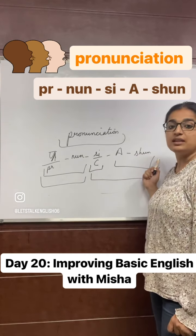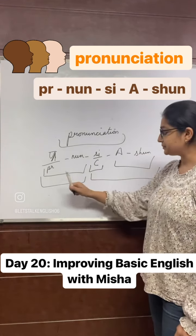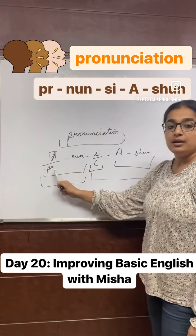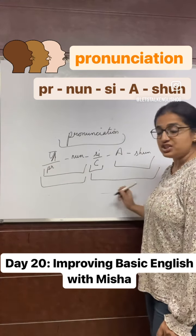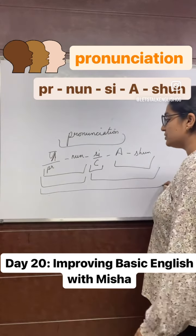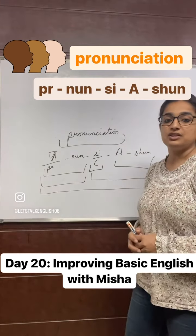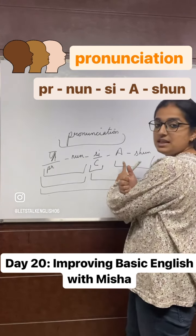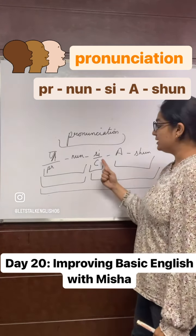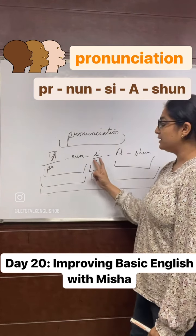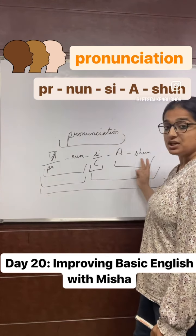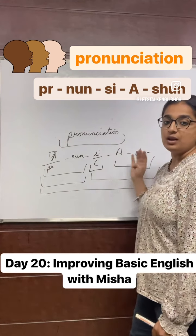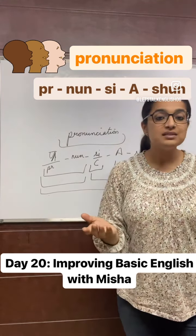Don't pronounce it as 'sh' or 's' — it's 'shun.' Now try speaking it all together: pronunciation. Speak after me five times: pranan-c-a-shun. Not 'pro' — one last time, speak it please. Thank you!